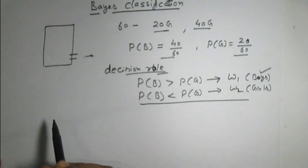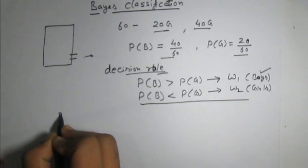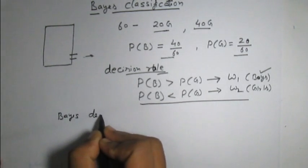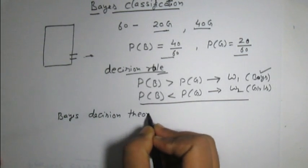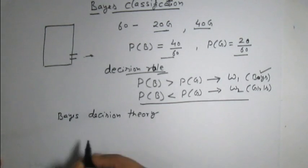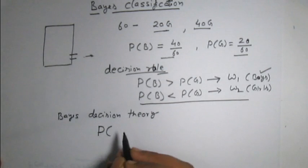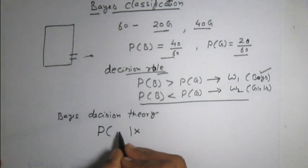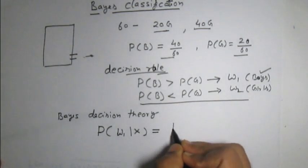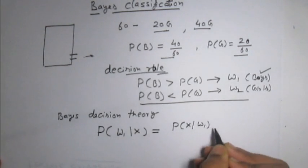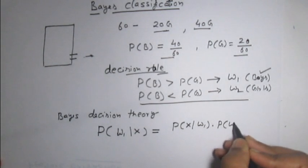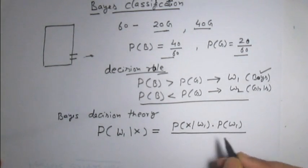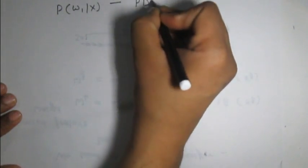Let us use Bayes' decision theory, which says that given a feature set x, we want to calculate the probability of a particular student being a boy or being in class omega 1. This equals the probability of the feature set x for class omega 1, times the probability of class omega 1, divided by the probability of the feature set x. Here P(omega 1 | x) uses a probability density function.